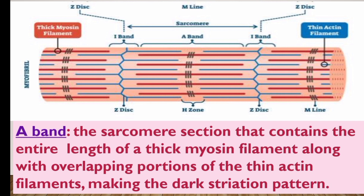The A-band contains the whole length of the thick myosin filament. The red thick myosin filament makes up the A-band, with the thin actin filament providing a small overlapping portion, creating the dark striation pattern.